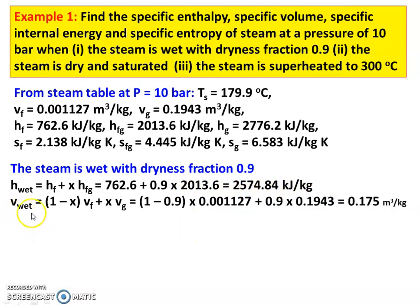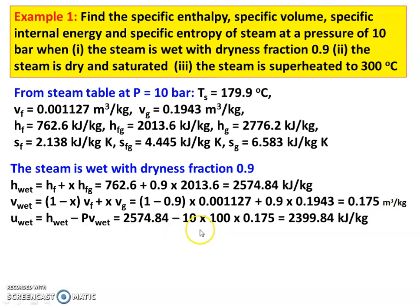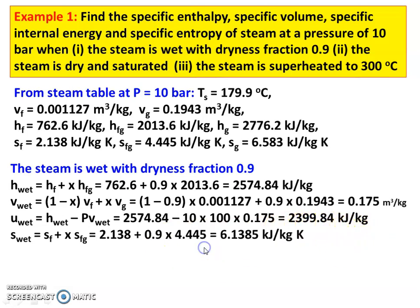Specific volume of the wet steam: V_wet = (1 − X)·VF + X·VG = (1 − 0.9)×0.001127 + 0.9×0.1943 = 0.175 m³/kg. Internal energy: U_wet = H_wet − P·V_wet = 2574.84 − (10×100)×0.175 = 2399.84 kJ/kg. Specific entropy of wet steam: S_wet = SF + X·SFG = 2.138 + 0.9×4.445 = 6.1385 kJ/kg·K.